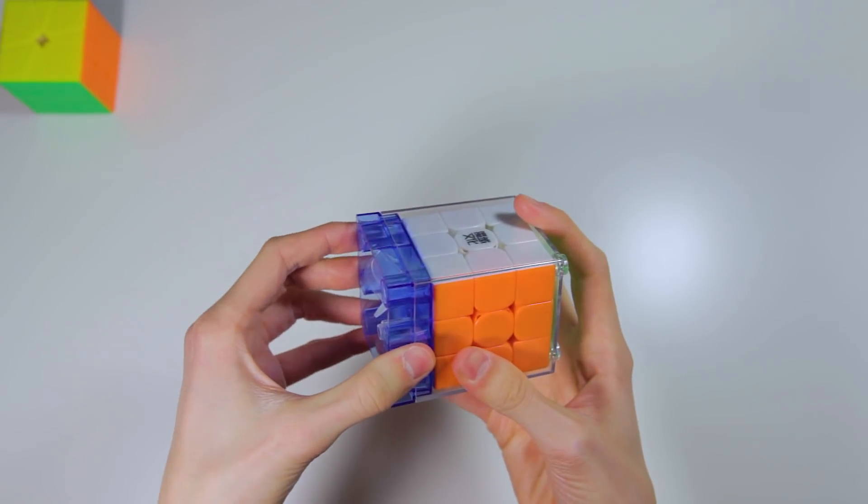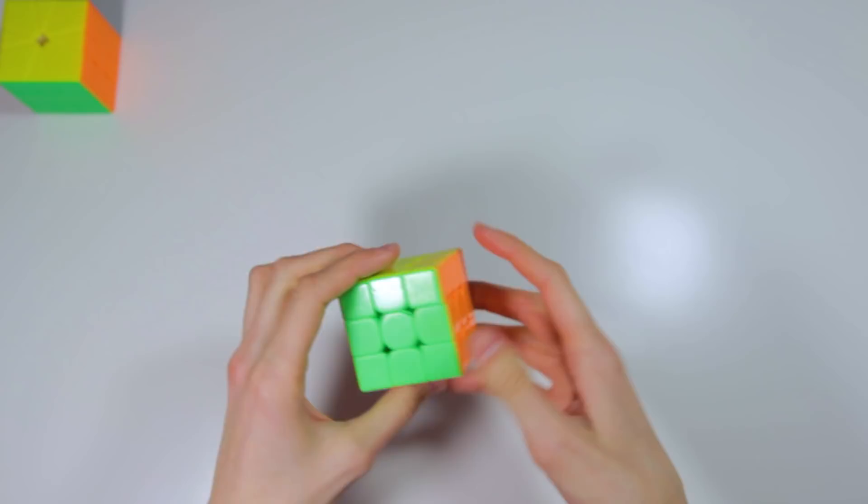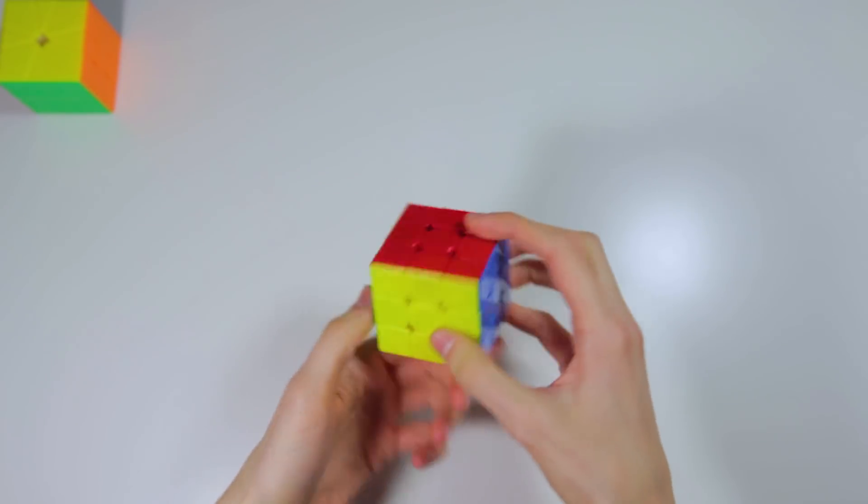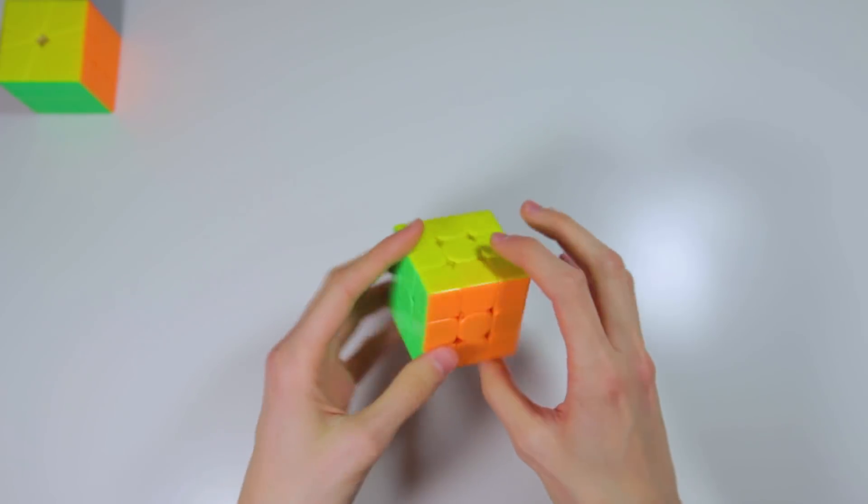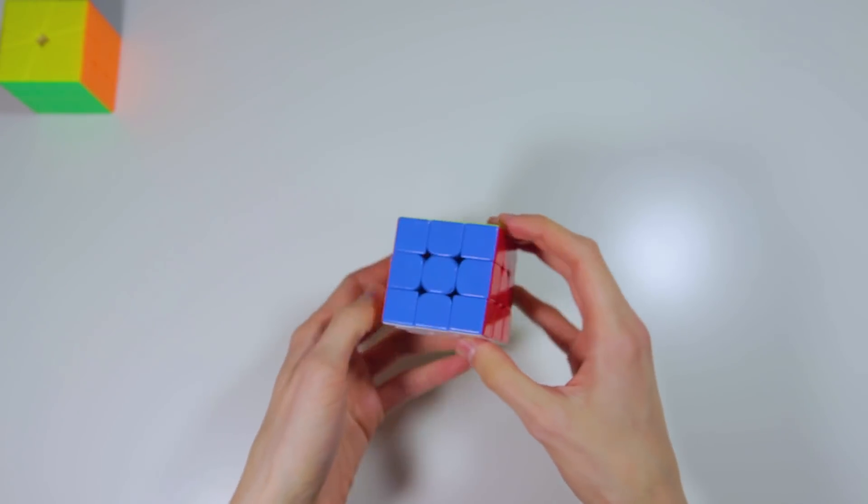Alright, so to take this out of the box, just slide the bottom off, and it pops right out. There's no lube on the outside, which is nice. I don't like when cubes come with lube on the outside. And the shades look pretty standard, with a slightly pale orange.